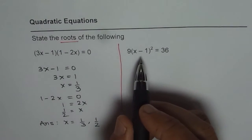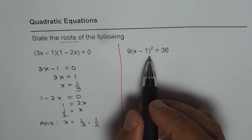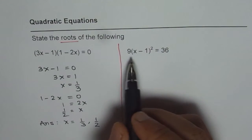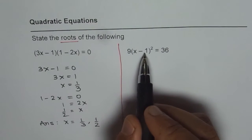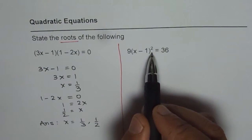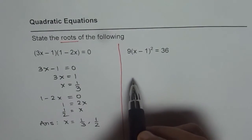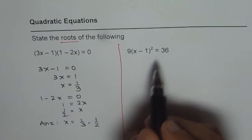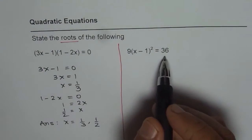Now here, we have kind of vertex form equations. At times, we can also write this as 9 times x minus 1 whole square minus 36 equals 0. In that case, you take it to the right side as we have done here and now follow the steps.